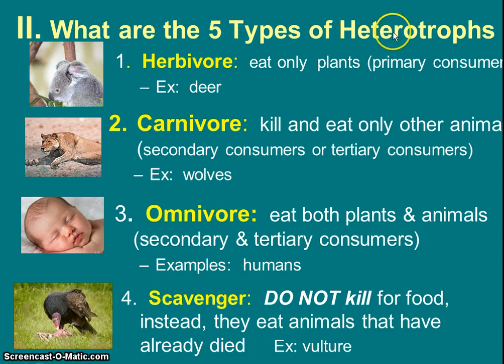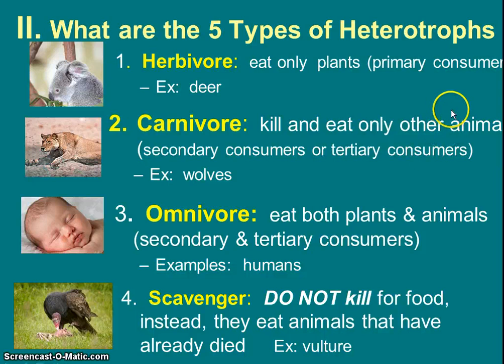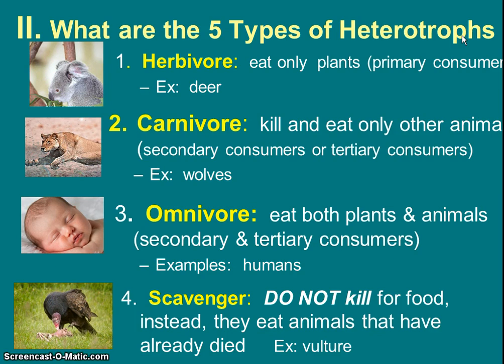Notice that all these things are heterotrophs. Heterotroph has a synonym: consumer. Notice that the word consumer is used over and over. What's the one thing you're not seeing here that's the opposite of heterotroph? Autotroph, or producer. That's because those are plants and they do not fit into this category at all, since we're only talking about things that eat other things — heterotrophs, or consumers.